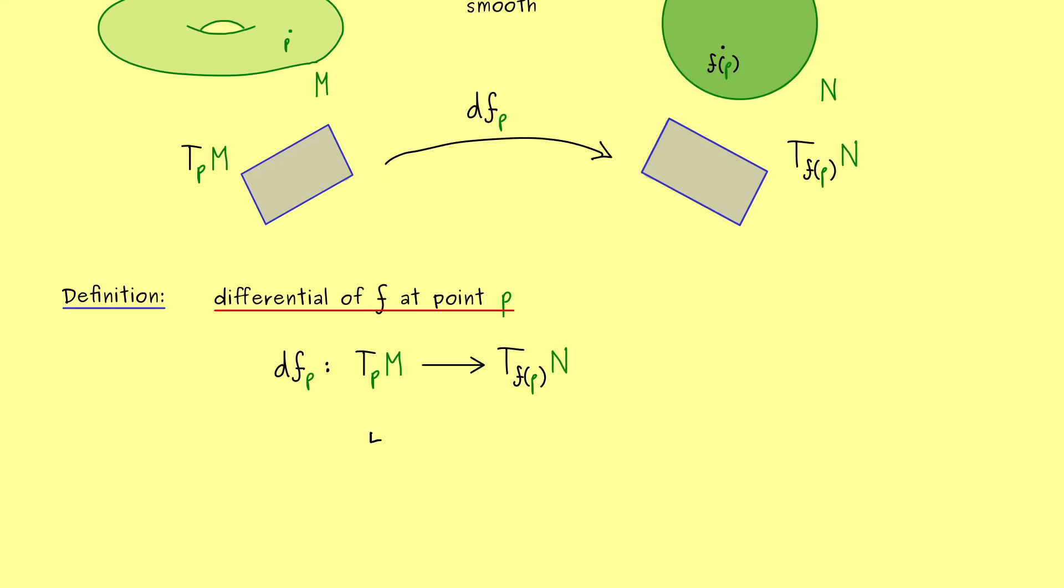Please recall a tangent vector for us is simply an equivalence class of a curve γ. We simply send this equivalence class to the right hand side, and there we also have to find a tangent vector, so also an equivalence class. The easiest way to do that would be to simply compose f with γ. It's not hard to show that this is indeed a well defined map.